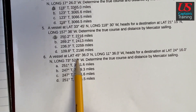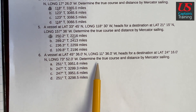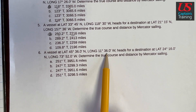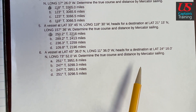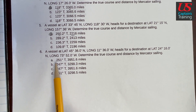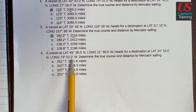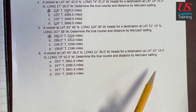Mercator Sailing practice problem six. A vessel at latitude 45 degrees 36.0 minutes north, longitude 11 degrees 36.0 minutes west, heads for a destination at latitude 24 degrees 16.0 minutes north, longitude 73 degrees 52.0 minutes west. Determine the true course and distance by Mercator Sailing.